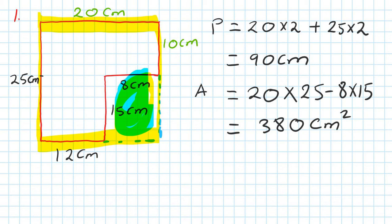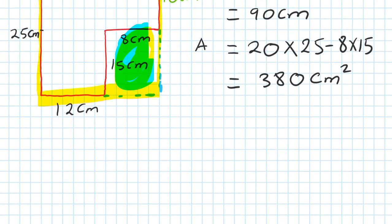So you analyze what shape it is, then work it out - area of a rectangle or square, depending on the shape. That's how you do it. Let's do the next one - number 2.